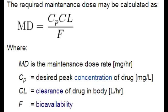What does the time for a drug to get to steady state depend primarily on? The time a drug takes to reach its steady state depends primarily on the half-life, and it is independent of dosing frequency or size.